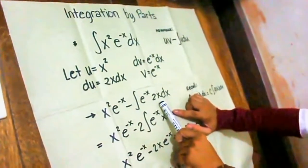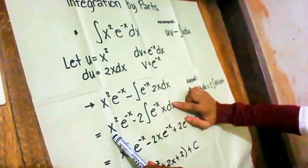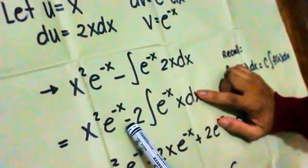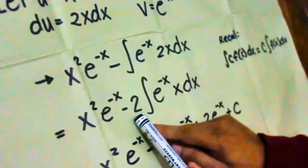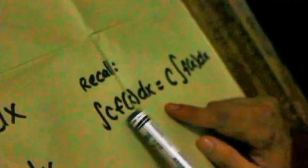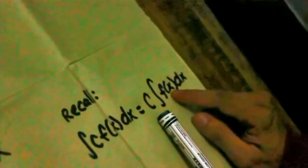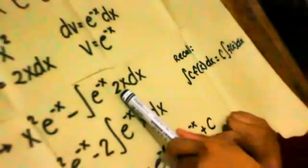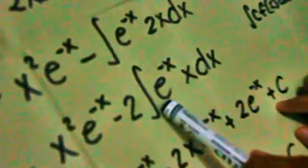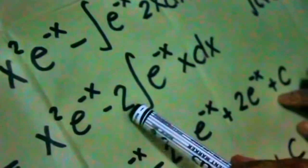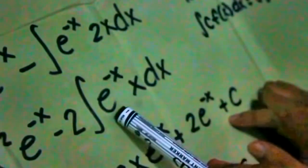This is the transformation of the problem from the given formula uv minus the integral of v du. Let's start simplifying. We copy our uv, which is x squared e to the negative x, minus 2 — because the integral of a constant multiplied by a function dx equals the constant placed outside the integral sign. So we set aside 2 outside the integration sign.